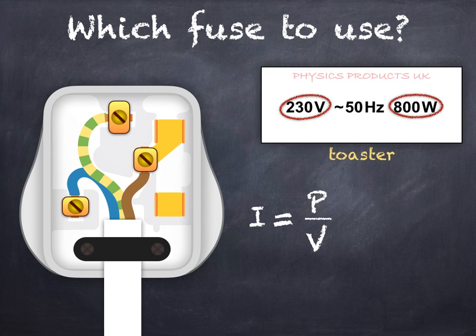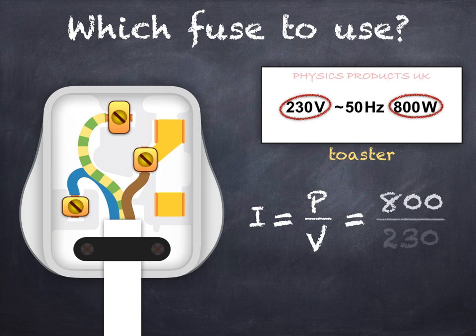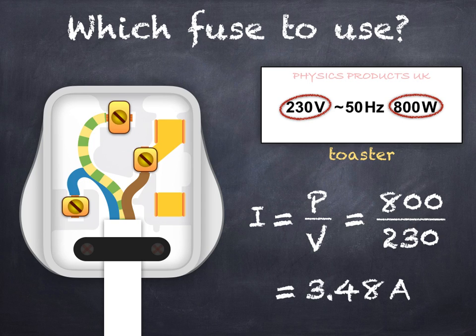Finally we have a toaster. This has the greatest power rating so far, 800 watts. Now devices which convert electrical energy to heat tend to have large power ratings. The current in the toaster then would be 800 divided by 230, which gives us 3.48 amps. So the toaster should be fitted with a 13 amp fuse. If you were to use a 3 amp fuse, it would break even if the toaster was operating normally.